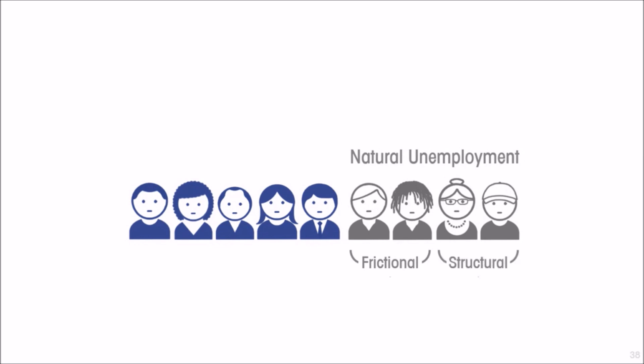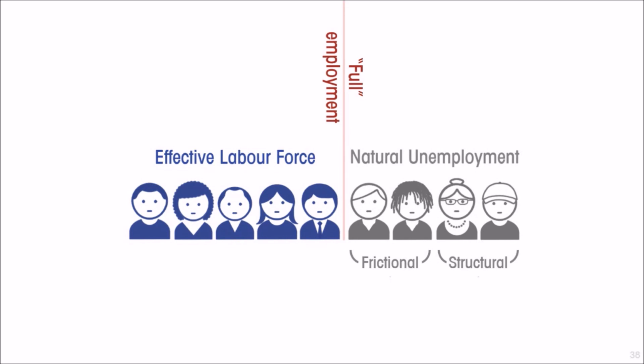There is always some tiny component of the labor force that ends up between jobs as part of natural unemployment. Then you have those who are structurally unemployed — even though they would like to have jobs, they don't have the skills and attitudes that make them employable. So the effective labor force is going to be less than the statistical labor force — less than everyone counted by the country's statistical agency as wanting a job. The effective labor force is what makes up the economy's productive capacity, and when it is fully employed, we are at what we can reasonably call full employment.